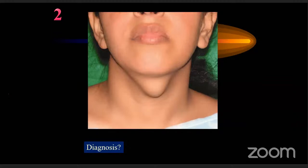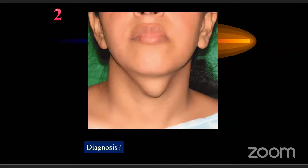Now some interesting cases. A lady in her thirties presents with a swelling behind her chin in the midline of the neck for the last three months, painless. The differential diagnosis for a midline neck swelling includes: thyroid nodule or thyroid pathology (commonest), thyroglossal cyst, lymph node (submental, laryngeal, pretracheal), subhyoid bursitis, or midline dermoid or lipoma. This patient has a thyroglossal cyst.